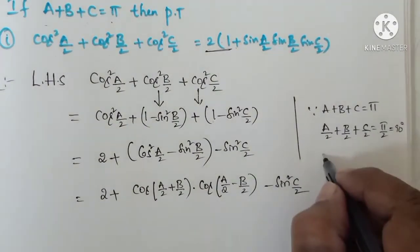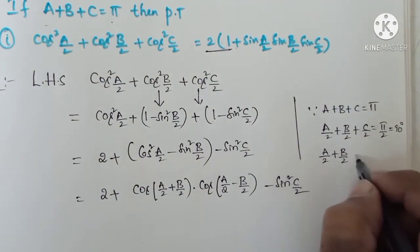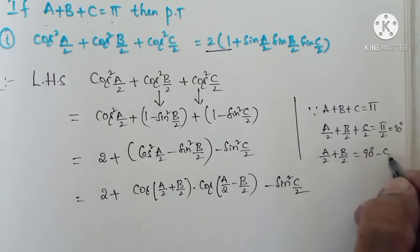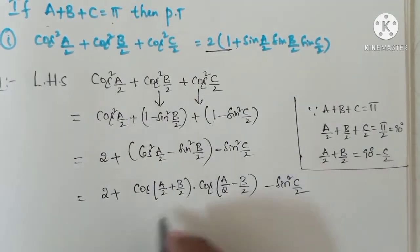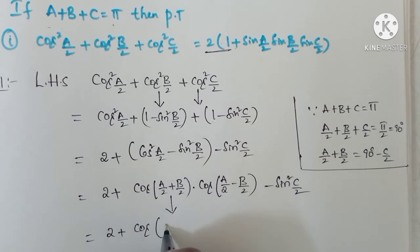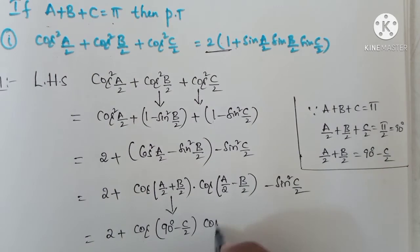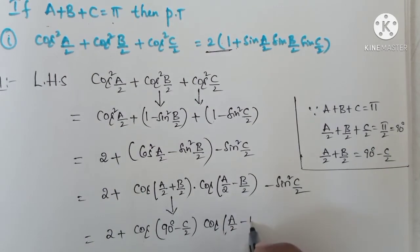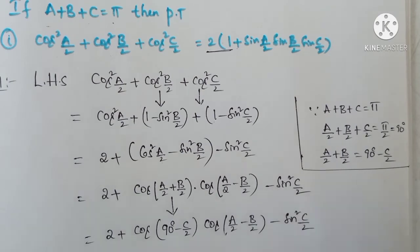So now, a by 2 plus b by 2 is equal to 90 degrees minus c by 2. We use this substitution: we get 2 plus cos(a by 2 plus b by 2) minus sin squared c by 2.